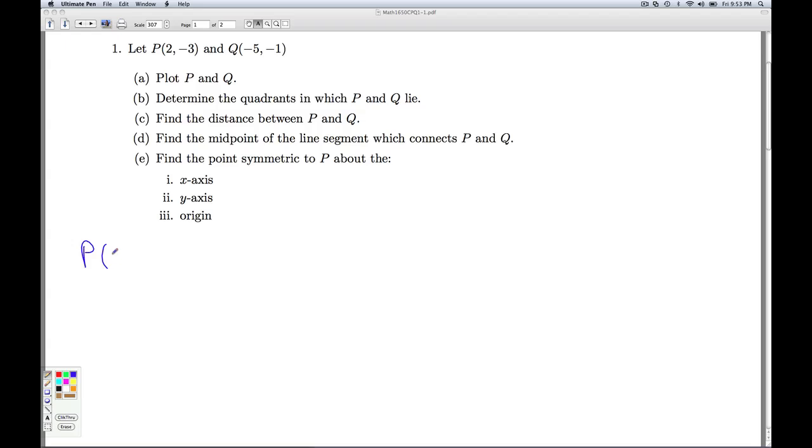If we're given a point P(X1, Y1), and another point Q(X2, Y2), the distance between these points can be found by taking the difference of the X's, X2 minus X1, square them, plus the difference in the Y's, Y2 minus Y1, square it, add them up, and then take the square root.